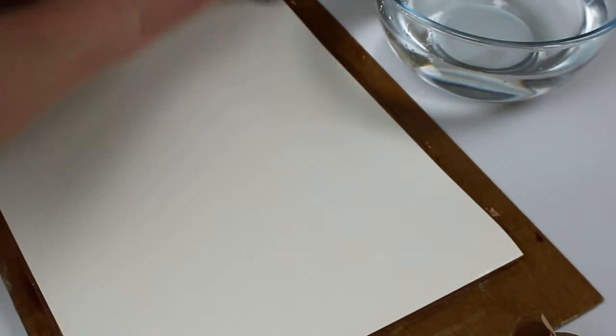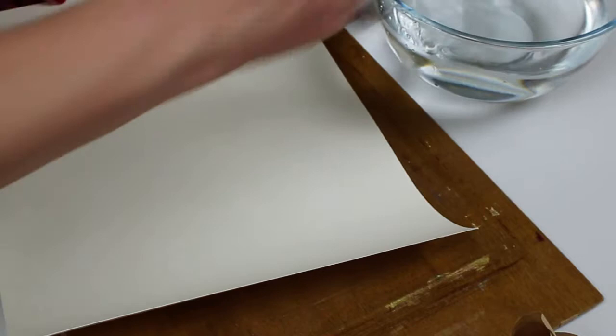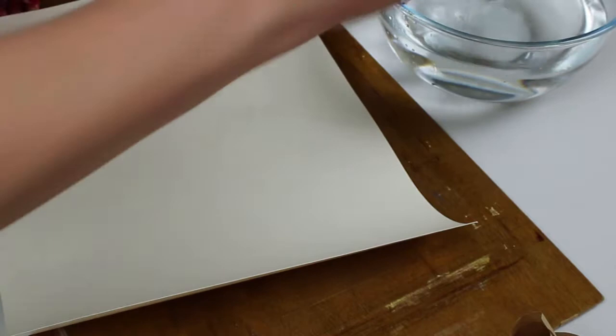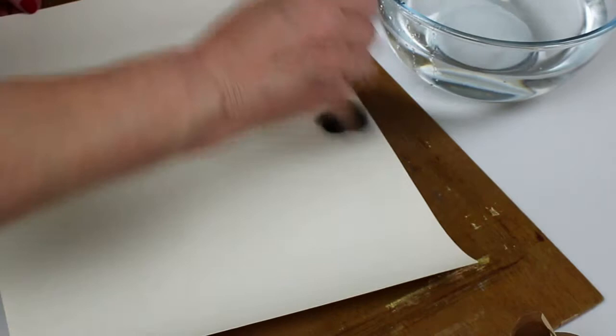What you're aiming for is for the fibers of the paper to absorb the water and they'll expand. And then when you lay that flat on your board and you use the tape to tape it down as the paper